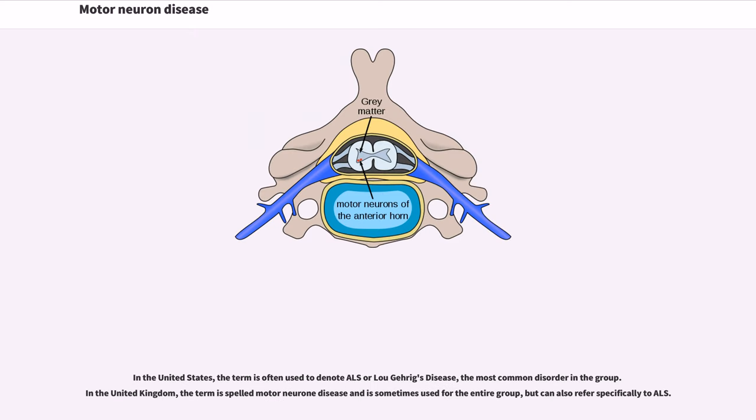In the United States, the term is often used to denote ALS or Lou Gehrig's disease, the most common disorder in the group. In the United Kingdom, the term is spelled motor neuron disease and is sometimes used for the entire group, but can also refer specifically to ALS.